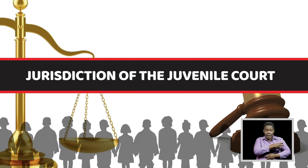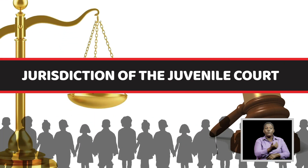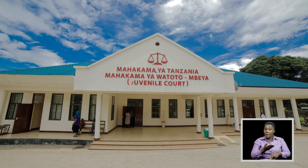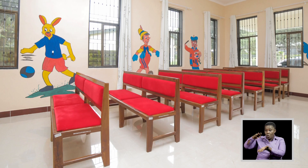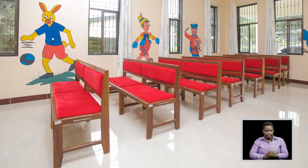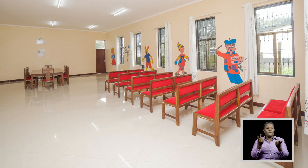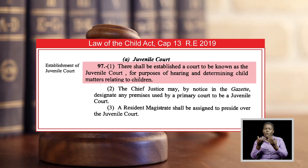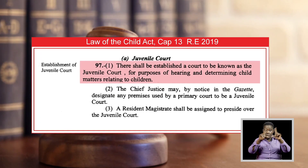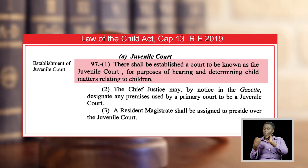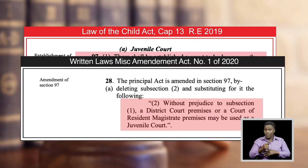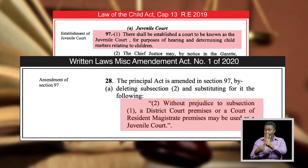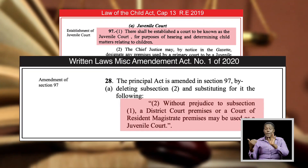Jurisdiction of the Juvenile Court. The juvenile court is a specialized court that hears and determines cases involving children. This is according to Section 97, Subsection 1 of the Law of the Child Act. According to Section 97, Subsection 2 of the Law of the Child Act, as amended by Written Laws Miscellaneous Amendment Act No. 1 of 2020, a district court premises or a court of resident magistrate premises may be used as a juvenile court.